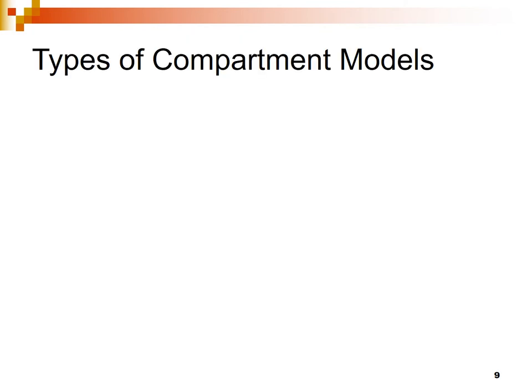Types of compartment models: Compartment models are classified as open or closed models. A model is called an open model when the administered drug is removed from the body by an excretory mechanism. If the drug is not removed from the body, the model is called a closed model — meaning once the drug is administered, it remains in the body forever.